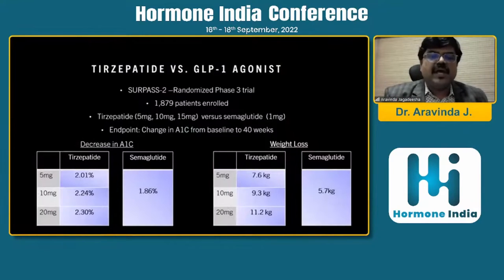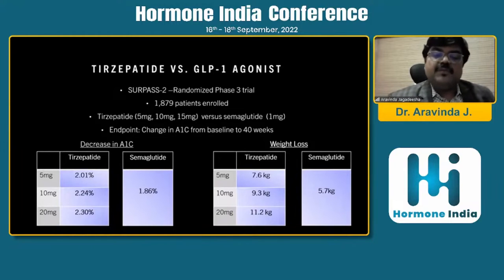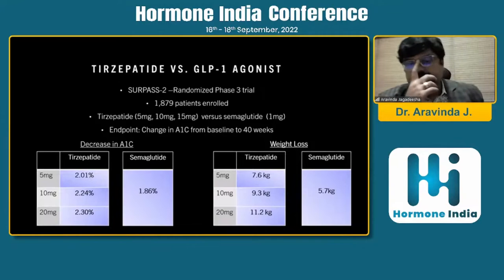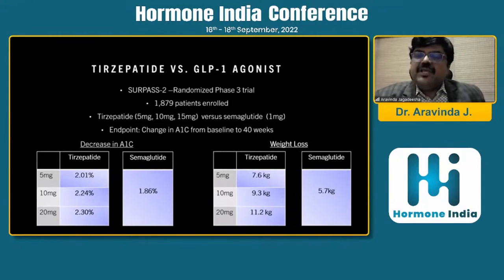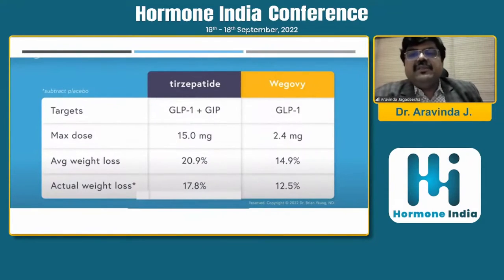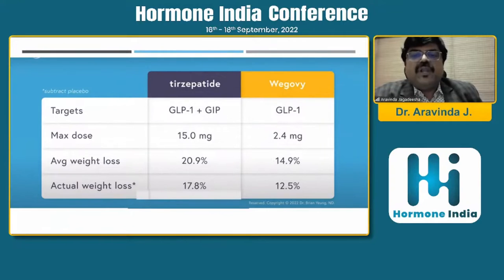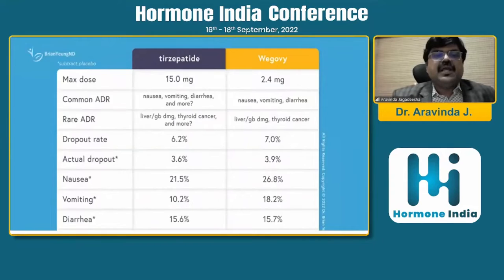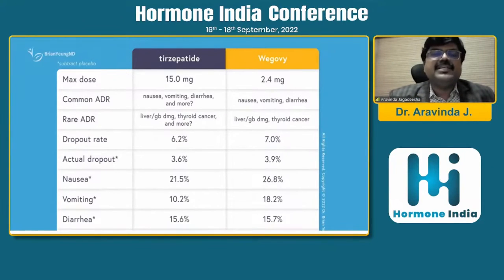Comparing tirzepatide versus GLP-1 receptor agonists, you can see on the left-hand side a decrease in HbA1C — with tirzepatide you can expect a reduction of up to 2.3%, compared to semaglutide at 1.86%. On the right-hand side, when it comes to weight loss, you can expect up to 11 kg weight loss with tirzepatide versus 5.7 kg with semaglutide. Using maximum doses — tirzepatide 15 mg versus semaglutide 2.4 mg — the average weight loss was 20.9% versus 14.9%. Actual weight loss was 17.8% with tirzepatide versus 12.5% with semaglutide. Nausea, vomiting, and diarrhea are seen in both, but comparatively less with tirzepatide.